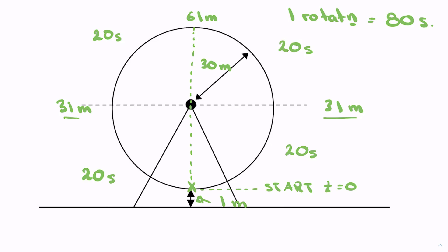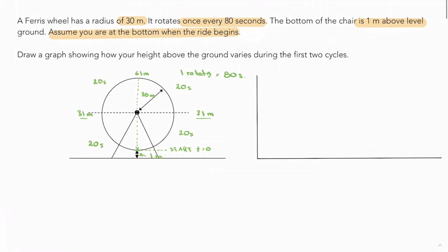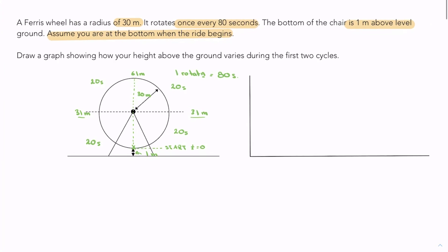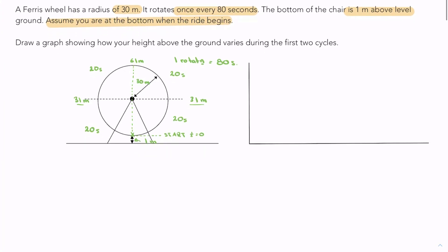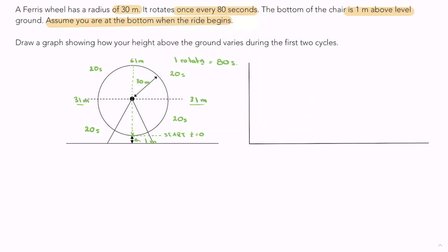I'm going to set this up. So I have an x and y grid on the side. On my x-axis is going to be time, and that will be in t seconds. On my y-axis I'm going to have height, and that will be in meters.